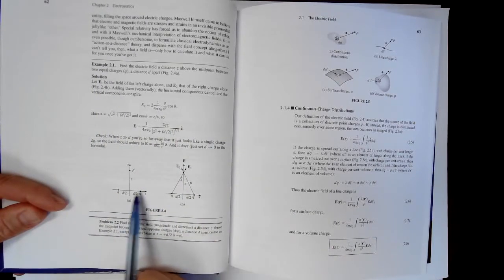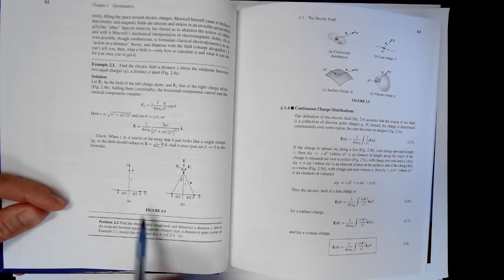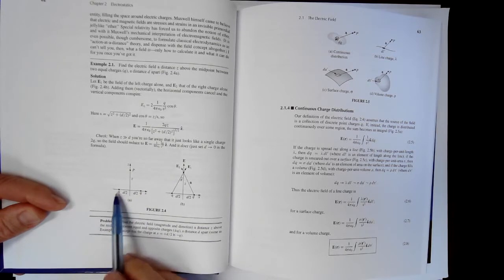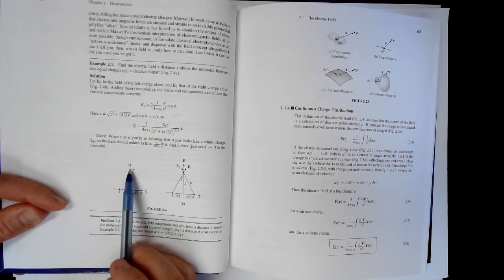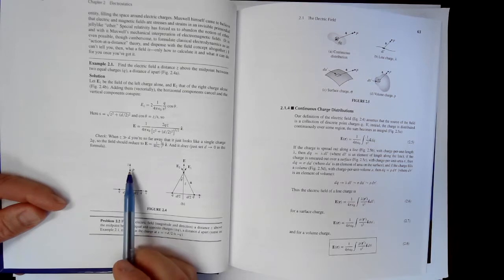There are two point charges on the x-axis. One of them is, in this case, negative q at x equals plus d over 2. The other one is positive q. And our goal is to find the electric field function for any point on the z-axis.